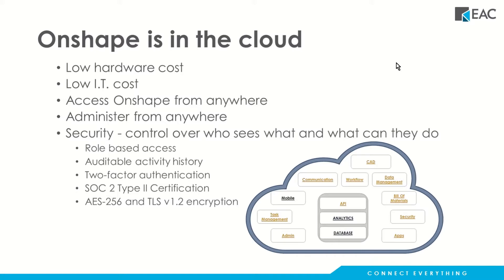It's also auditable. Onshape keeps track of everything you do, which is good for a couple of really big reasons. First, if you need to check on who's been accessing what and for how long, you can do that. Also, because it keeps track of everything, you never lose anything. As a CAD operator or designer, the system doesn't crash. I can go back to any point in history and start from there. Nothing is ever lost. I don't have to do a bunch of saves or save-as. It's always being tracked, always being saved.